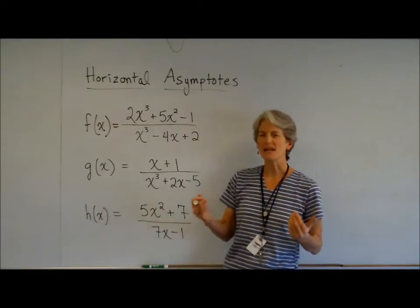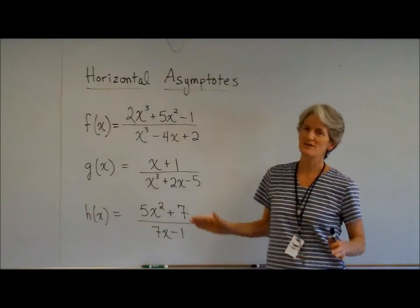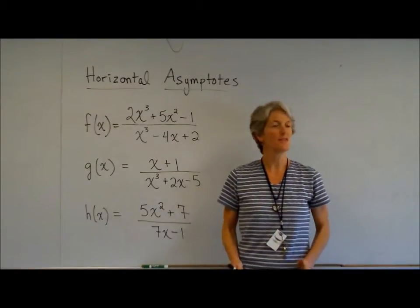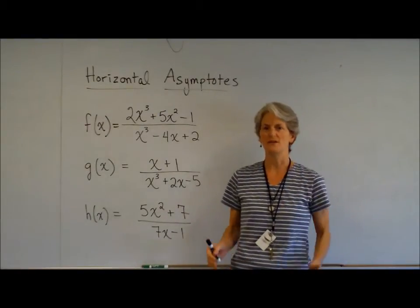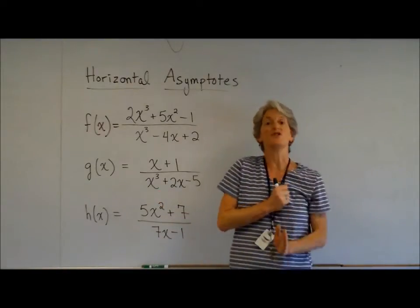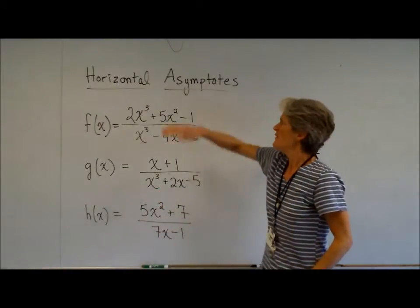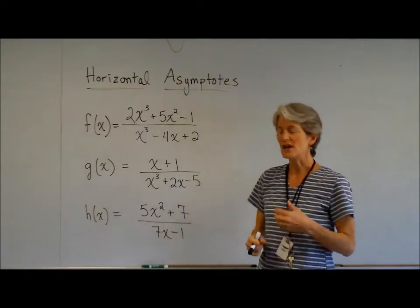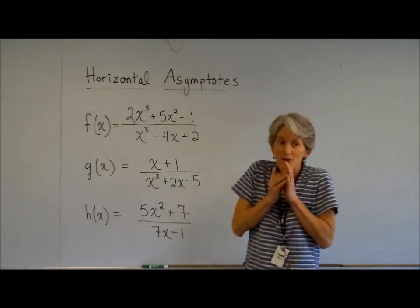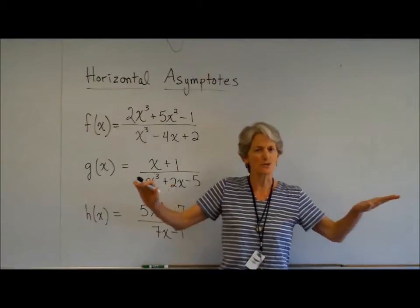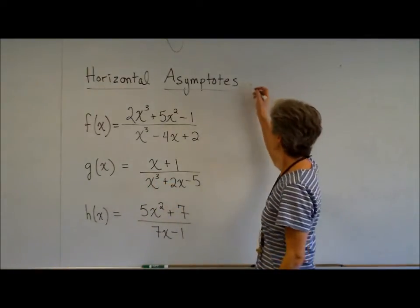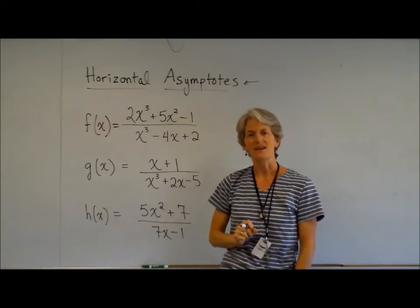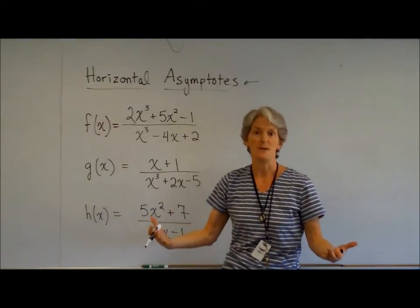It kind of bothers me a little bit that the same word is used — asymptote — because with vertical asymptotes we really think it's a hole in the function. It's really where the function is undefined. Not so with horizontal asymptotes. Horizontal asymptotes are like vertical asymptotes in that the function is getting closer and closer to it, but it is not where the function is undefined. It really is just indicating end behavior.